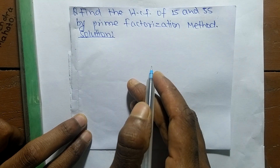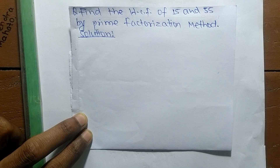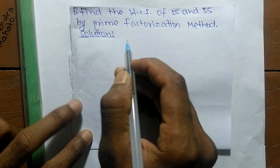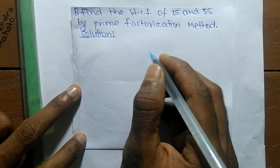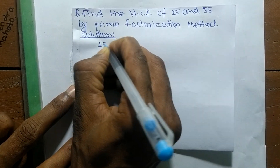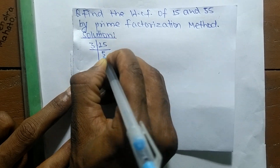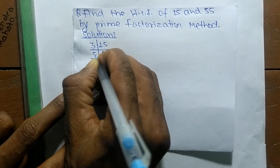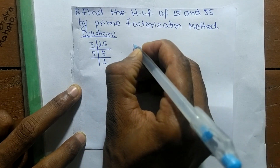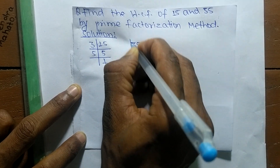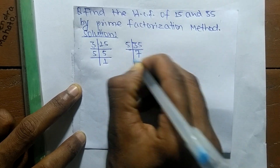Today we shall learn to find the HCF of 15 and 35 by the prime factorization method. First, we find the prime factors of 15: it is 3 times 5, which equals 15, and 5 times 1, which equals 5. So the prime factors of 35 are 5 times 7, which equals 35.